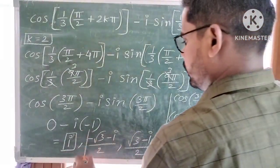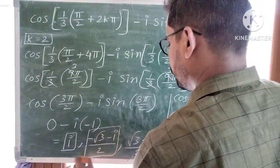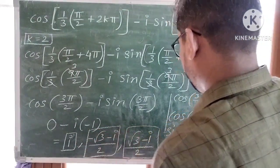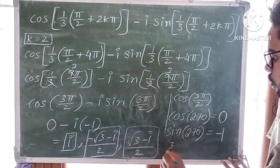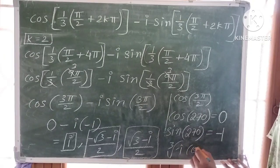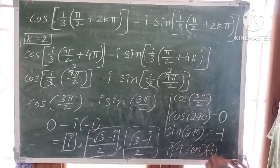These three are the solutions of the cube root of minus i, or (−i)^(1/3): (√3 − i)/2, (−√3 − i)/2, and i.